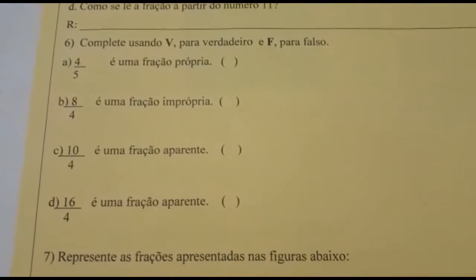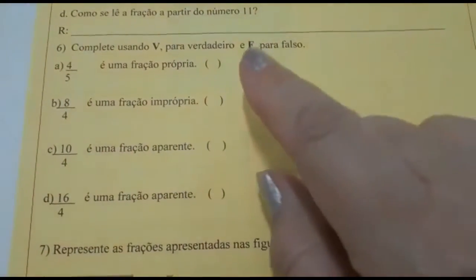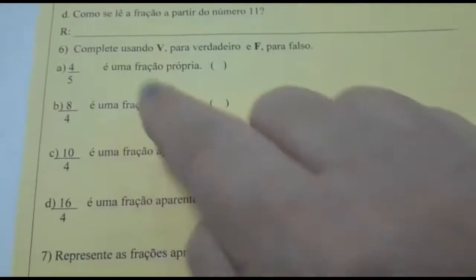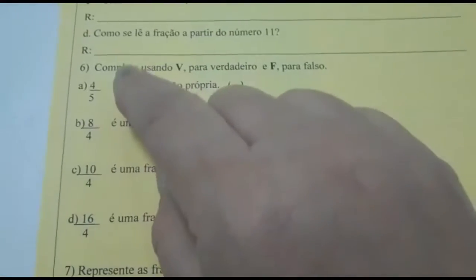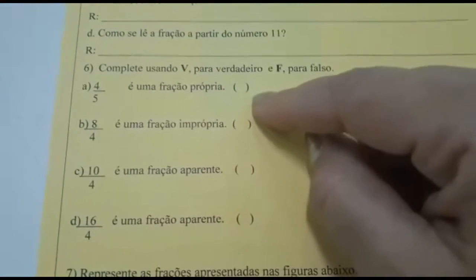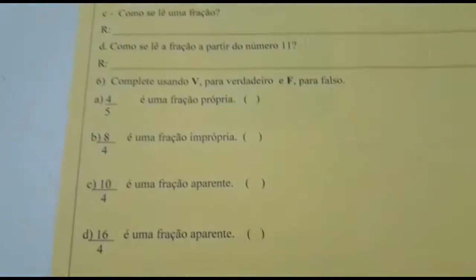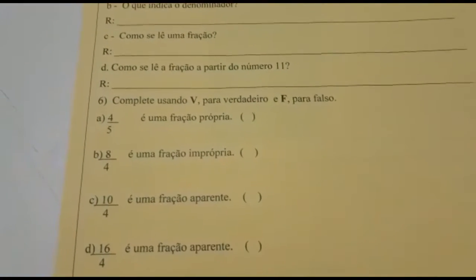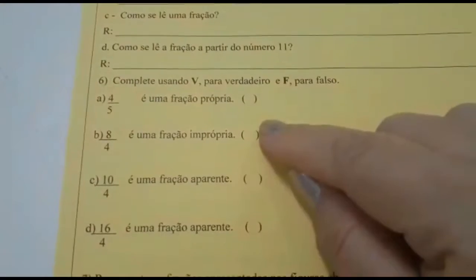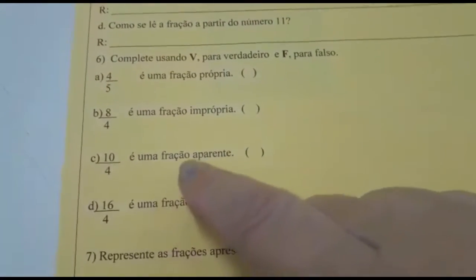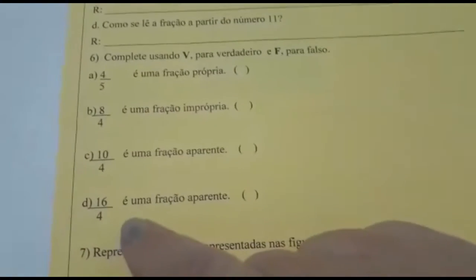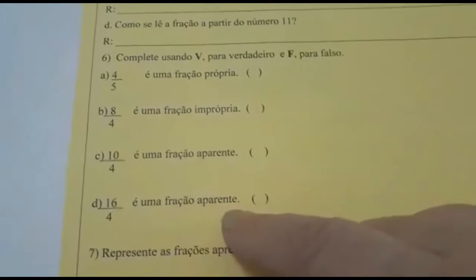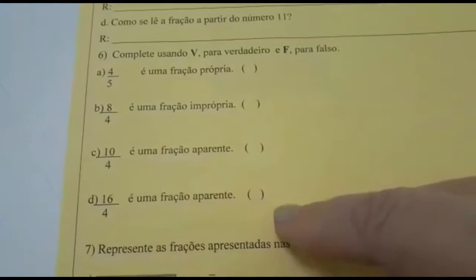Número 6: Complete usando V para verdadeiro e F para falso. Vocês vão analisar a fração e vão dizer se é verdadeira ou falsa. Letra A: 4 quintos é uma fração própria? Coloquem V ou F. Letra B: 8 quartos é uma fração imprópria? V ou F. Letra C: 10 quartos é uma fração aparente? V ou F. Letra D: 16 quartos é uma fração aparente? V ou F.